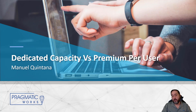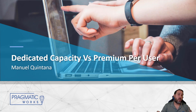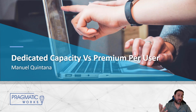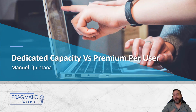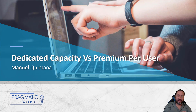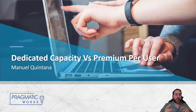So you and your organization can have a better idea to decide: we know we need some of these features, we know we need to take advantage of what premium gives us, but are we going with dedicated capacity — which is more of an organizational decision — or premium per user, which is purchased by the organization but assigned to individual users? PPU is interesting because it kind of falls in the middle. It's not shared capacity per se, but technically organizationally you're still in shared capacity, though a PPU workspace is kind of different.